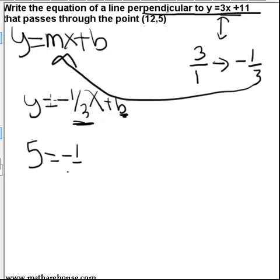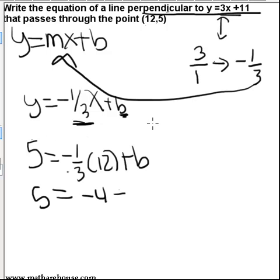5 equals negative 1 third times 12 plus b. And now we're in the nice spot of having one equation and one unknown b, so we can solve for it. And b is going to be 9.